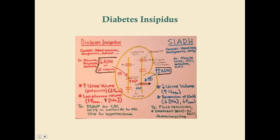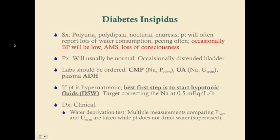To differentiate central from nephrogenic DI: first, if the patient has polyuria, polydipsia, nocturia, low blood pressure, altered mental status, or loss of consciousness, the first step on the USMLE is always to start fluids. If the patient is hypernatremic, the best first step is to start hypotonic fluids — D5W — targeting sodium correction at approximately 0.5 mEq/L per hour. You don't want to correct sodium too fast in either direction.